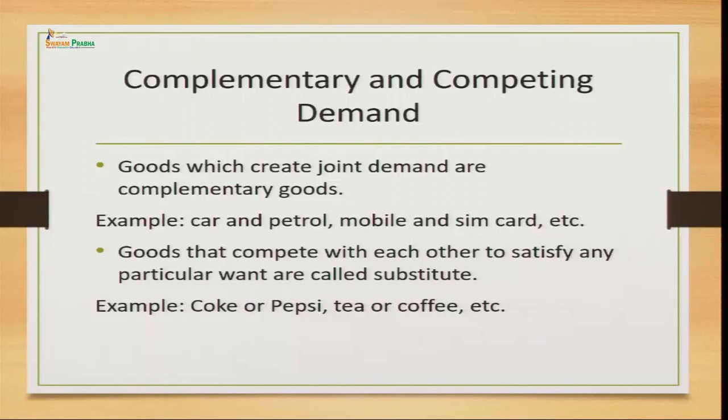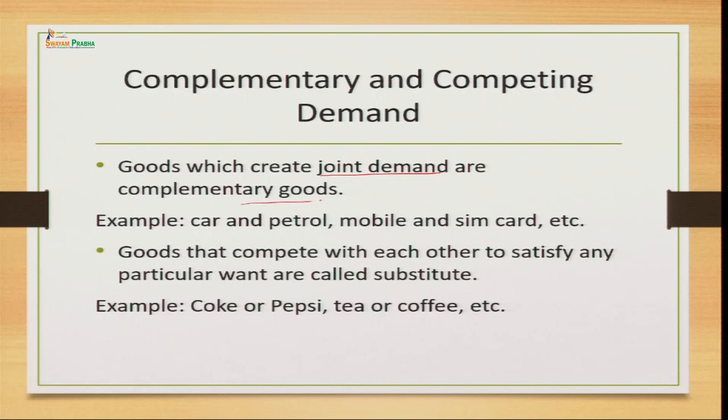Next is complementary and competing goods demand. Complementary goods are those goods which have joint demand — which we consume together, like pen and ink, mobile and SIM card, printer and cartridge, car and petrol. These are complementary goods. Whereas goods that compete with each other — substitutes like tea and coffee, Pepsi and Coke — which can be used in place of one another, have competing demand. Complementary goods create joint demand; competing goods are substitutes for each other.